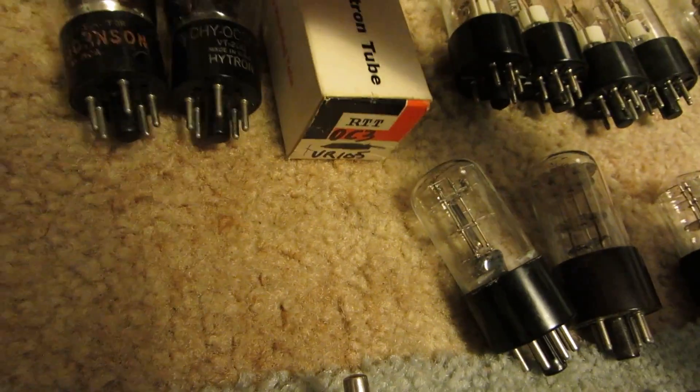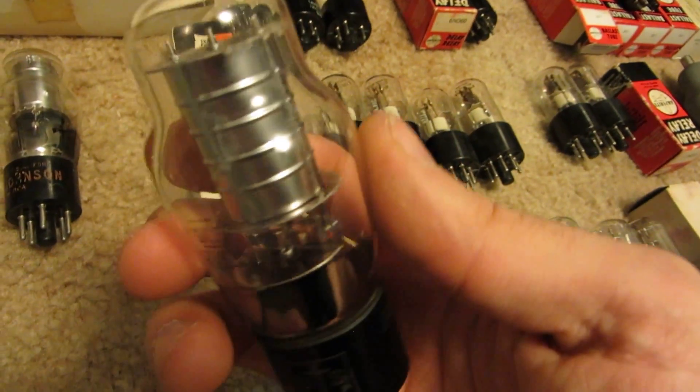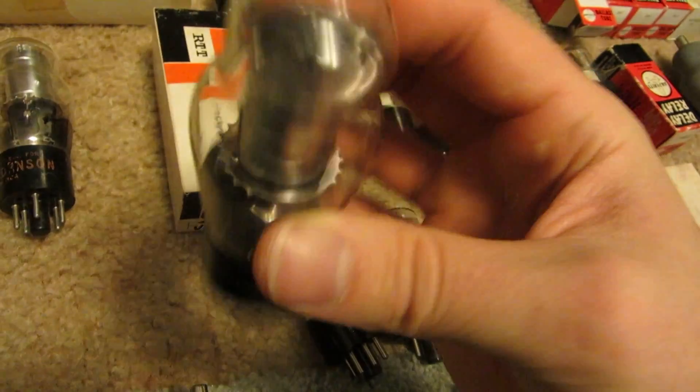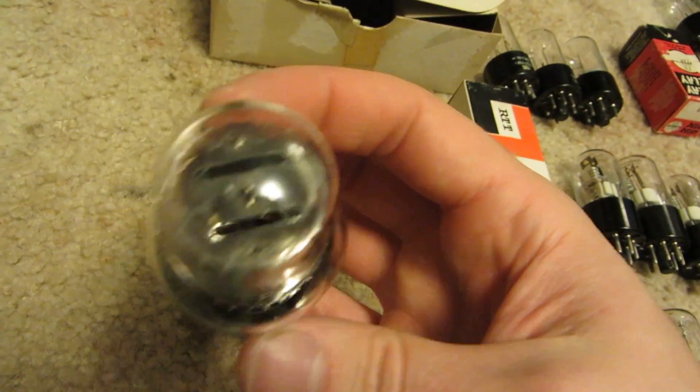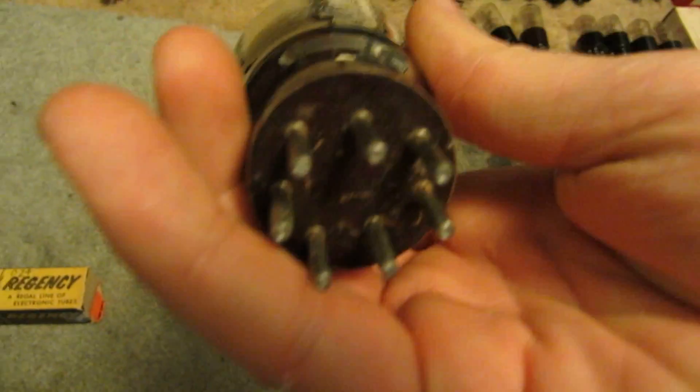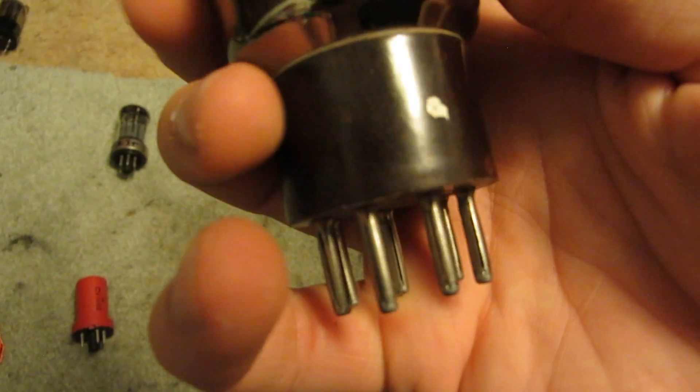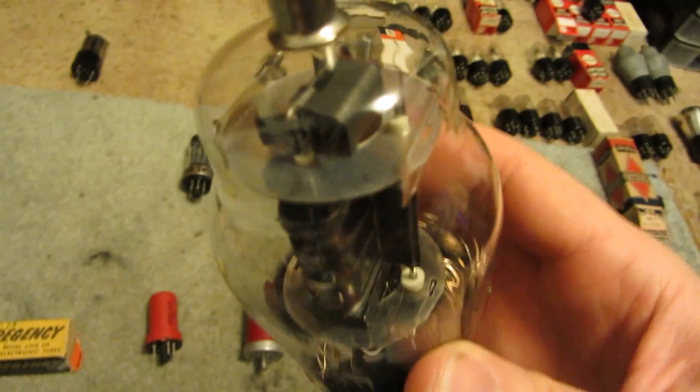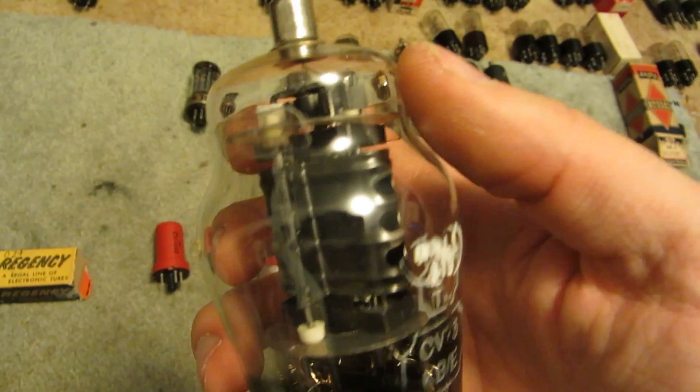Here we got some O-C-3/V-R-105's. An O-D-3. And here's a big one, again another weird pin layout, a C-V-7-3. There's a lot going on in this one.